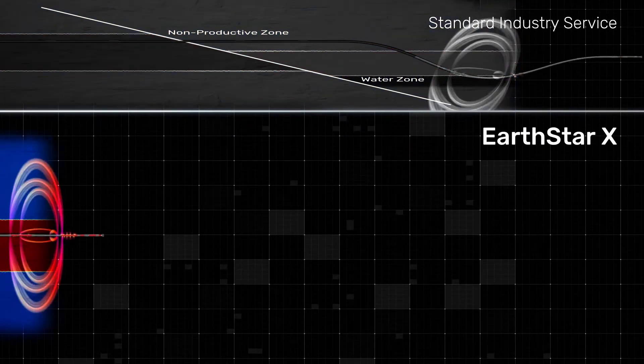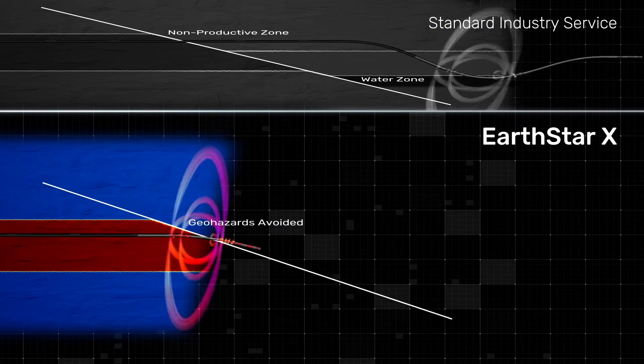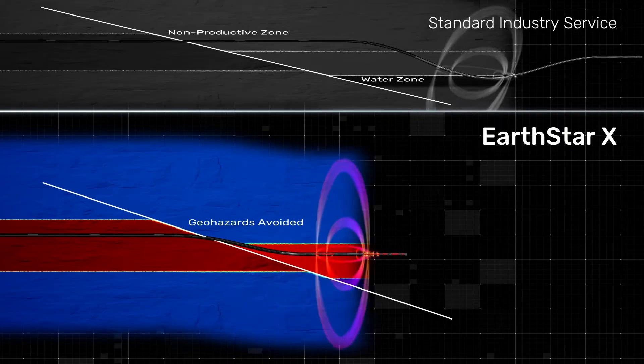The EarthStar X-Service moves the inversion measure point closer to the bit, as close as 9 feet behind the bit, to accurately map the geology all around the wellbore.